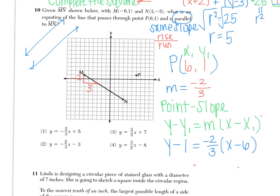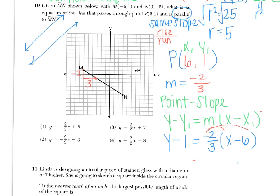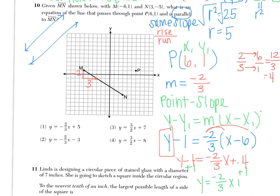But as we can see, that's not actually a choice. So we have to do a little bit of more work. I'm going to work to get this in Y equals. So first I'm going to distribute the negative 2 thirds. So we still have Y minus 1 equals negative 2 thirds X. Negative times negative gives me positive, and 2 thirds of 6 is 4. But we're still not in Y equals. I have to add this 1 to both sides. So now we get Y equals negative 2 thirds X plus 5, which looks like choice 1.